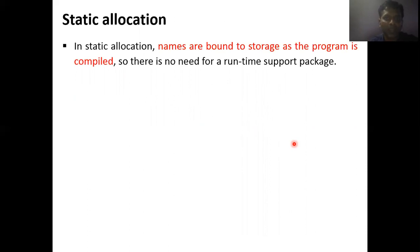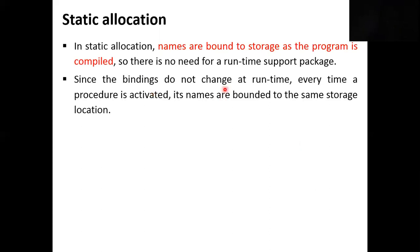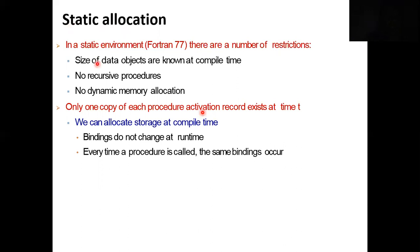Static allocation: names are bound to storage as the program is compiled. We know what amount of memory is required for each variable and calculate it at compile time — there is no need for any runtime storage management. Whenever a procedure is activated, the name of that procedure's activation record is bound to its static storage location only, because there is no runtime recursion in static allocation. Size of data objects is known at compile time, no recursive procedures, no dynamic memory allocation — only one copy of each procedure's activation record exists at a time. Bindings do not change at runtime.